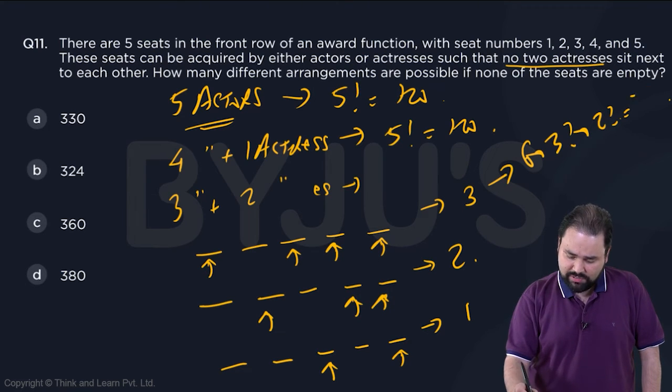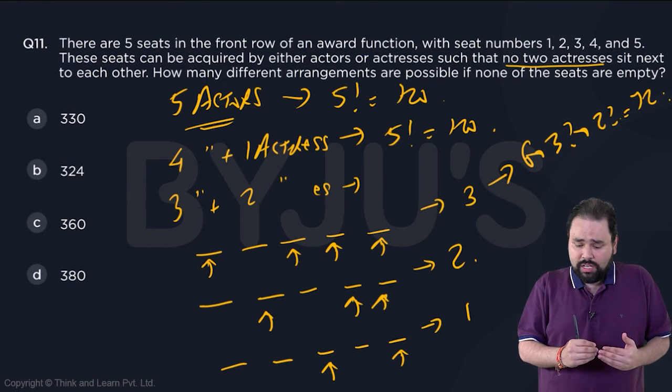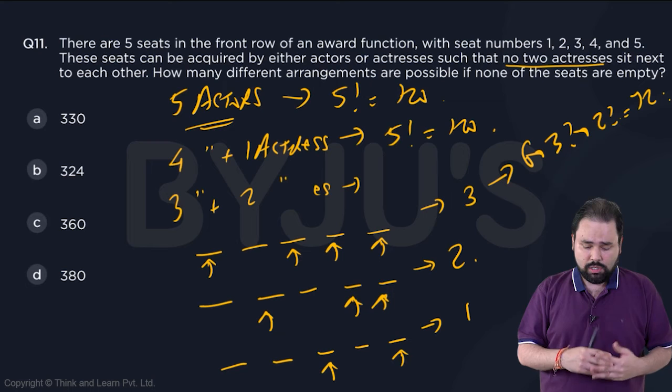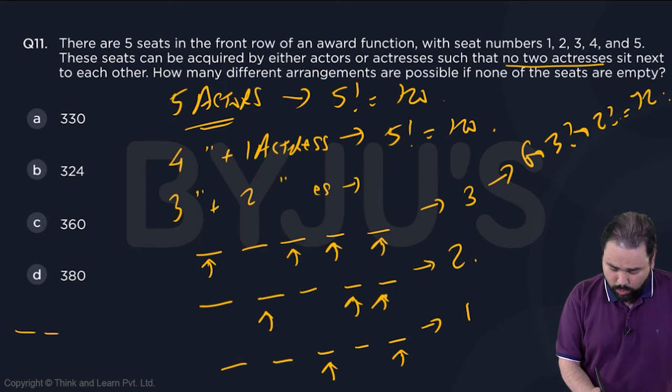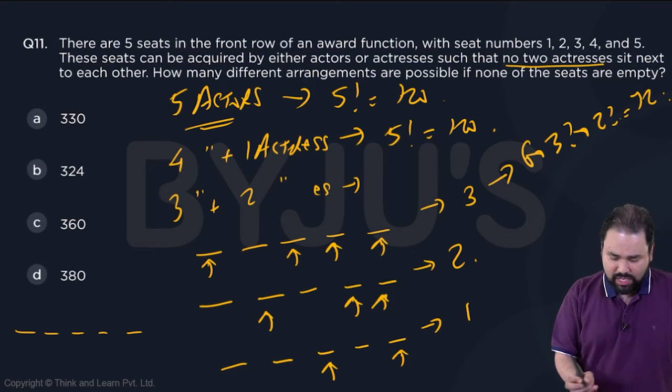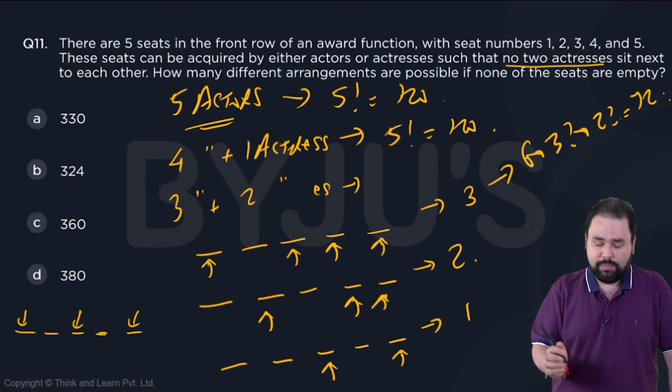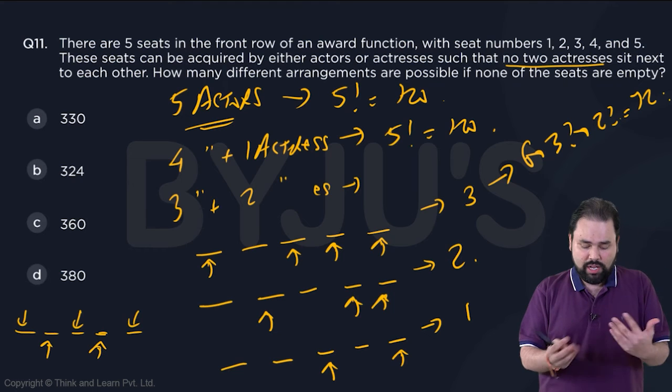And the last one, if it is possible, would be three actresses and two actors. If there are three actresses, they can be at positions one, two, three because they can't be together. That means these are the actors. So the three actresses will arrange among themselves in 3 factorial ways and actors in 2 factorial ways, which is 6 × 2, which is 12.